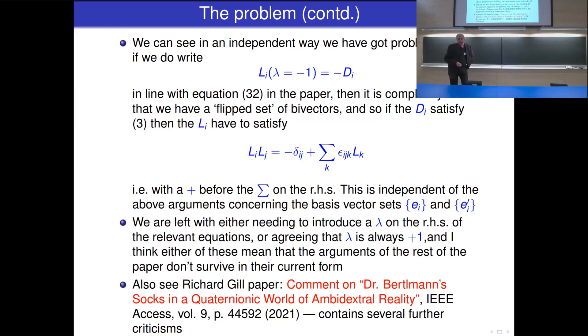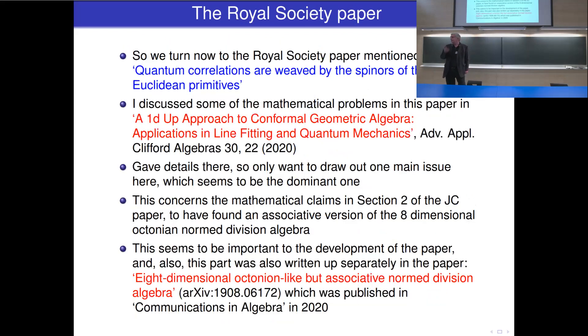So you're left with either needing to introduce the lambda on the right-hand side of the relevant equations, or agreeing that lambda is always plus 1. I think either of these mean that the arguments of the rest of the paper don't stand up from their current form. Now Richard Gill, who I think is online as well, he wrote a comment about the Bertlemann's Socks paper which was published in IEEE, and he draws attention to these same equations. He suggests patching them up in terms of the definitions of the cross product, but then went on to look at several other problems contained in the paper. I put here what I believe is the intrinsic problem with those equations themselves, and how you're left with lambda basically all to be plus 1.